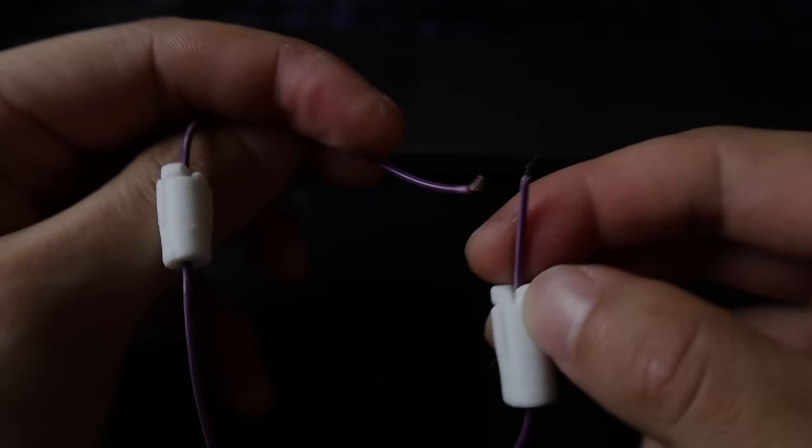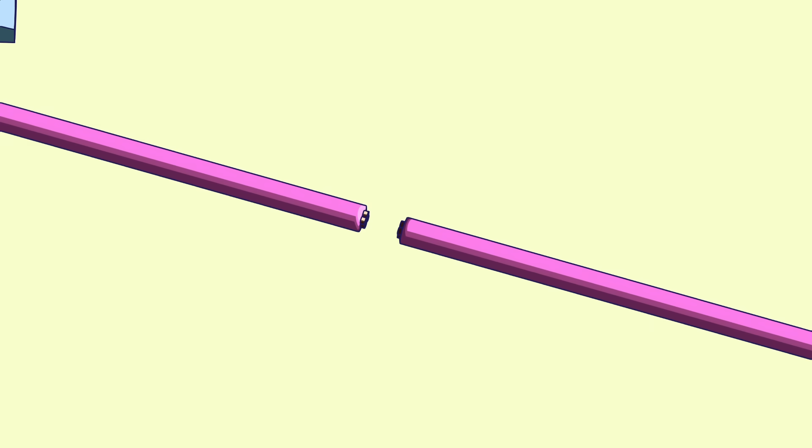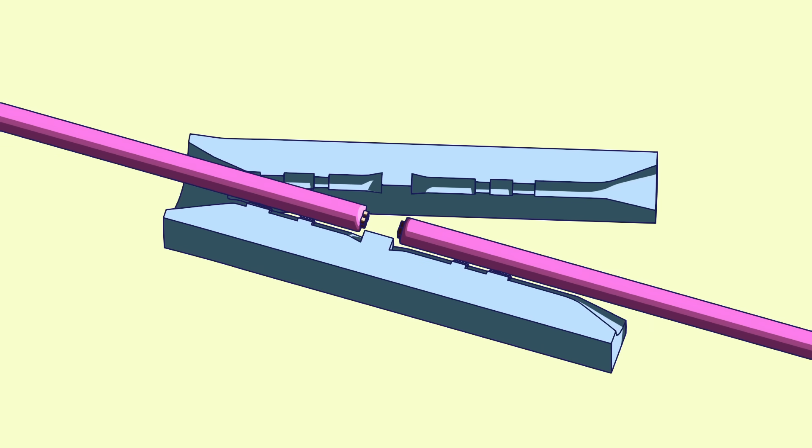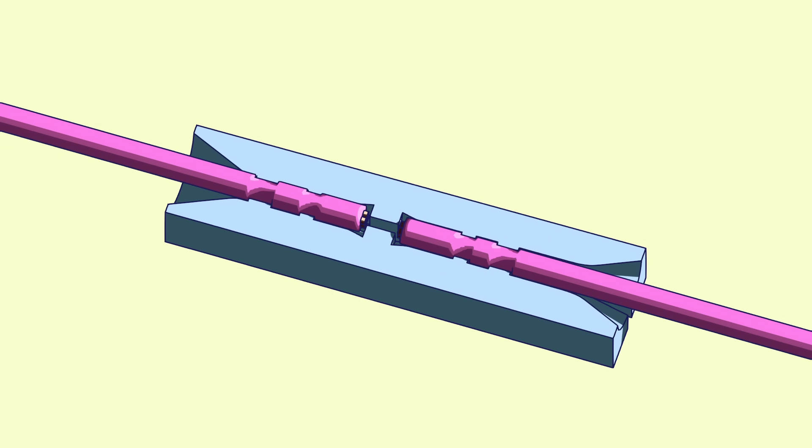So how does it work? The idea behind it is pretty simple. A compliant plastic lever would slip over the wire and cinch down mostly on the insulation rather than the copper wiring itself.